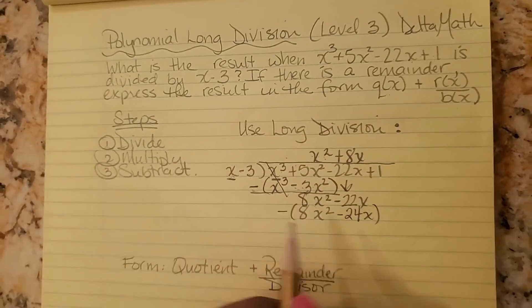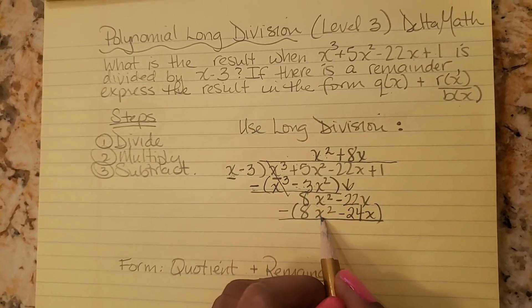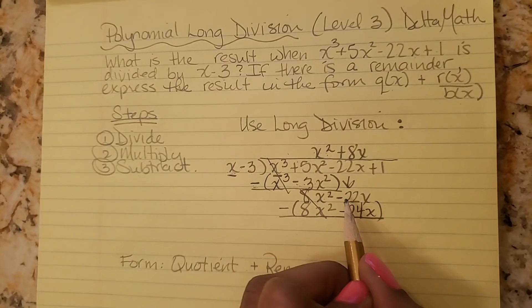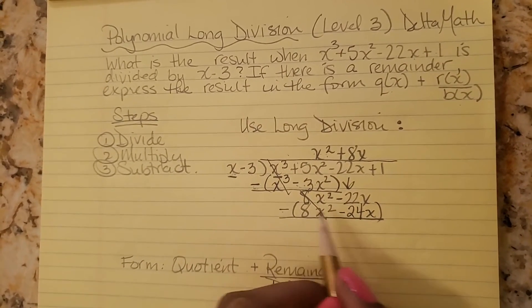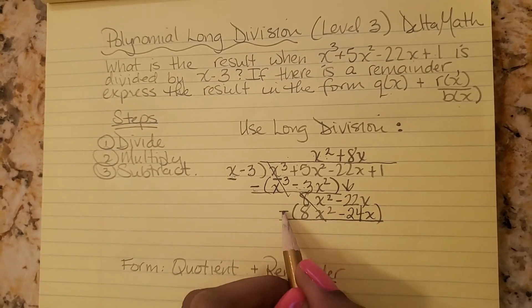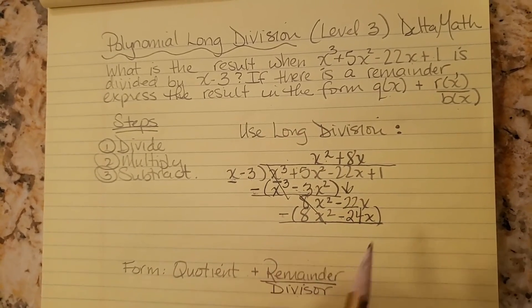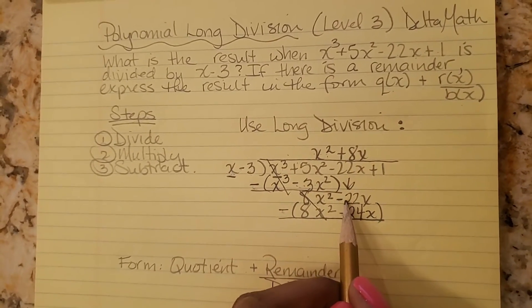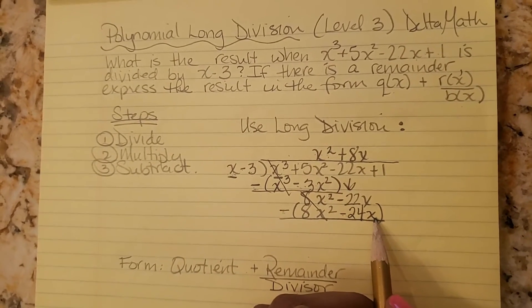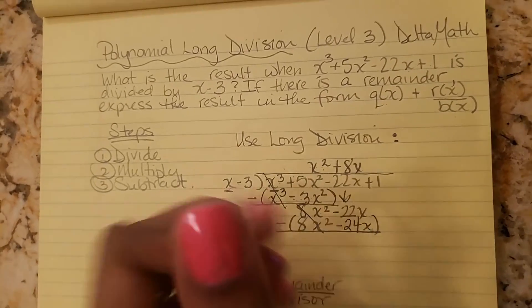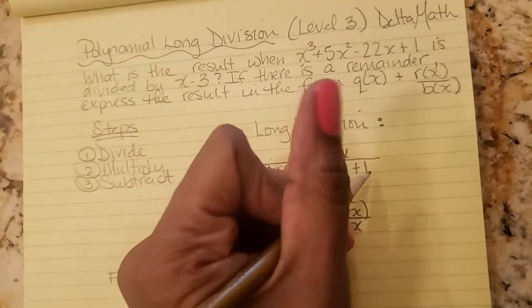Let's subtract. 8x squared minus 8x squared is 0. Negative 22x minus negative 24x. Well, this becomes addition. It's like a double negative, getting rid of a bad thing, that's a good thing. So negative 22x plus 24x, that's 2x. You got it. And then we bring down this plus one.